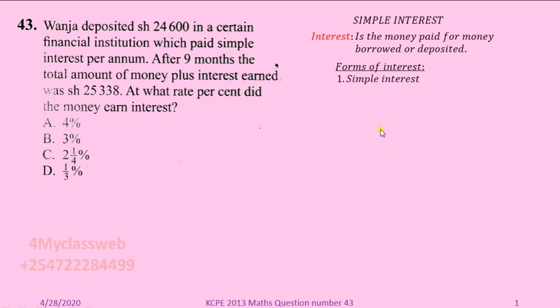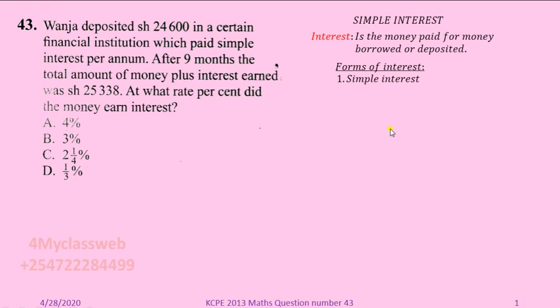Now we want to look at the forms of interest. There are two forms. The first form is simple interest, like the case we have here. The second form is compound interest. This question has nothing to do with compound interest, and therefore for now I will not talk about compound interest — that we shall reserve for another time.